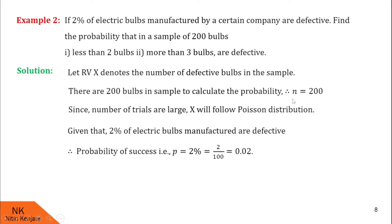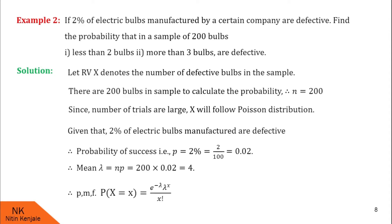Now we have p as well as n, so we can calculate mean lambda given by n into p: 200 into 0.02, which is 4. Therefore lambda is equal to 4. Now we write the corresponding probability mass function: P(X = x) = e raised to minus lambda, multiplied by lambda raised to x, upon x factorial, where lambda is 4. So P(X = x) = e raised to minus 4, multiplied by 4 raised to x, upon x factorial.